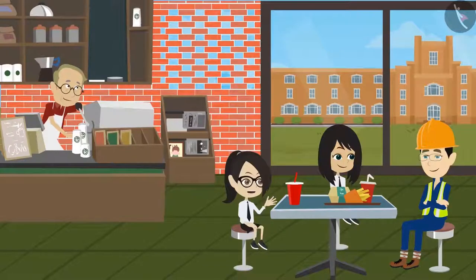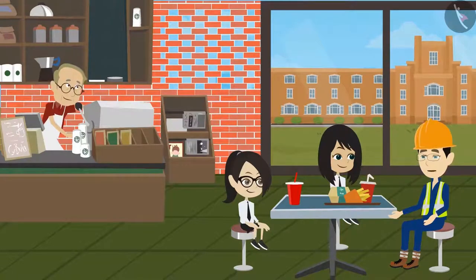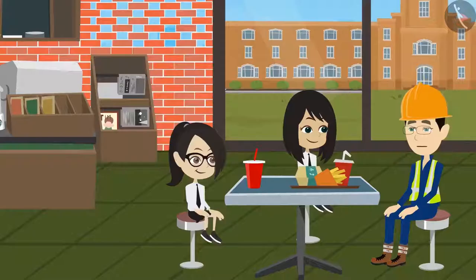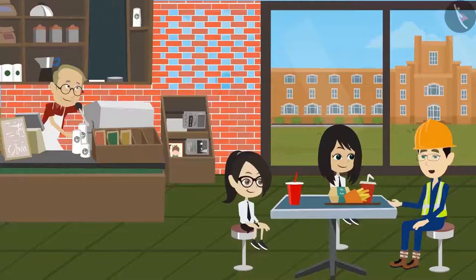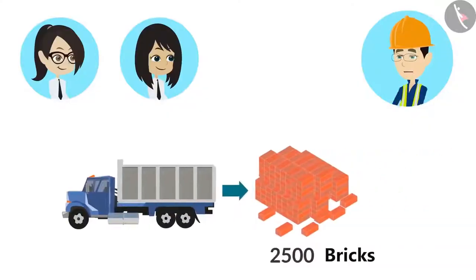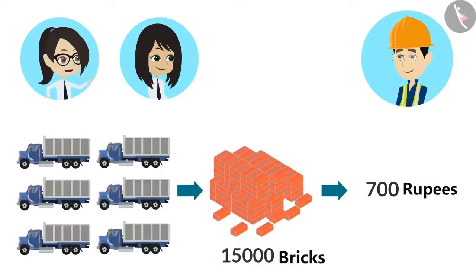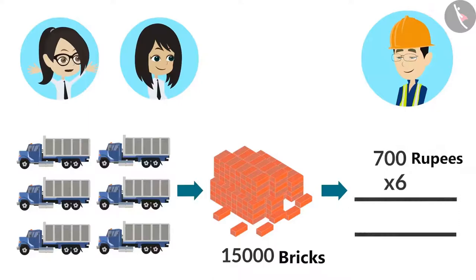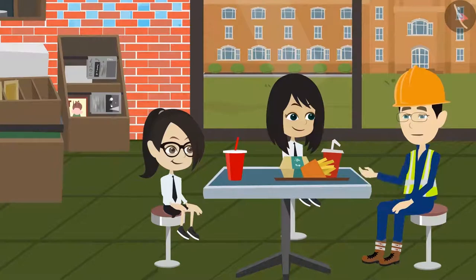How much money did this cost? It is easy to calculate the expense of bricks. It only includes the cost of bricks and the transportation charges for the bricks to be delivered at the construction site. Transportation charges? Yes, trucks are used to transport bricks from the furnace to the construction site. The trucks that transported bricks for your canteen charged Rs. 700 for one round. This means for 6 rounds we multiply 700 by 6, which equals 4200. So tell me, how much did the bricks cost for the construction of this entire canteen?